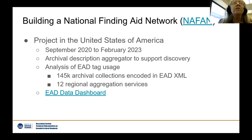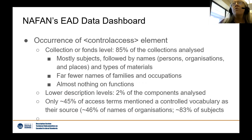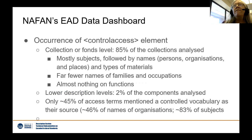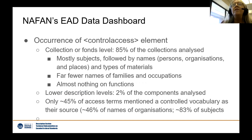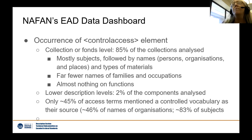One of the pieces of information they found: they looked at 145,000 archival collections encoded in EAD across 12 different regional aggregation services. They found that the control access element — the specific element in EAD designated for putting in access points using a controlled vocabulary — was used in about 85% of the collections analyzed, mostly for subjects, then a little less for names and types of material. But only about 45% of those access terms mentioned a controlled vocabulary as their source.